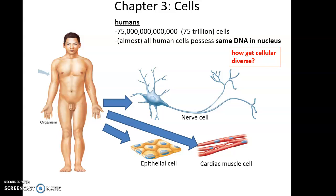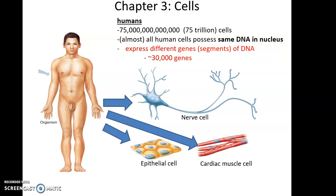Almost all of our cells possess the exact same DNA in the nucleus — DNA that codes for all the instructions that lead to the development of our cells, giving us nerve cells, cardiac cells, epithelial cells, and so on. So how do we get this diversity of cell types if they all use the same DNA? It turns out that each kind of cell expresses different genes — different portions of the DNA.